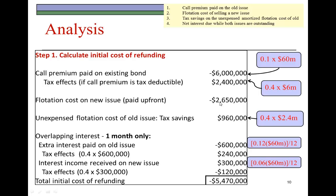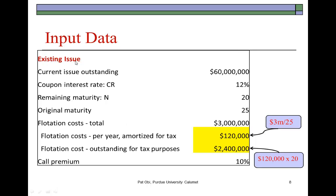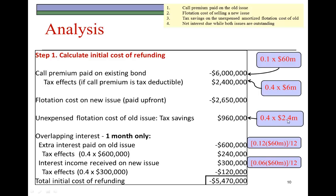Third is the tax savings on the unexpensed amortized flotation cost of the old bond issue. Of the original $3 million, we still have $2.4 million yet to expense ($120,000 per year times 20 years remaining). Multiplying $2.4 million by the 40% tax rate gives $960,000 — a one-time tax savings available right now if you choose to refinance, because the government allows you to recognize tax savings on regular financing expenses.